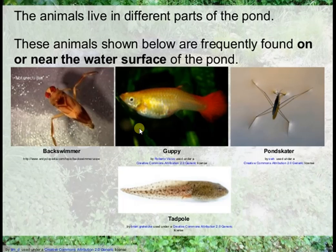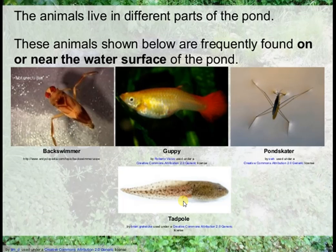What are the animals that share the surface of the pond as habitat? The animals live in different parts of the pond. These animals shown below are frequently found on or near the water surface of the pond: back swimmer, water boatman, pond skater, tadpole, and larva of frog. These are the animals that share the surface of the pond as habitat.